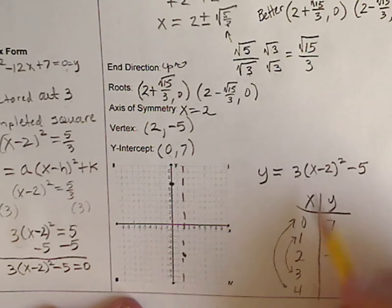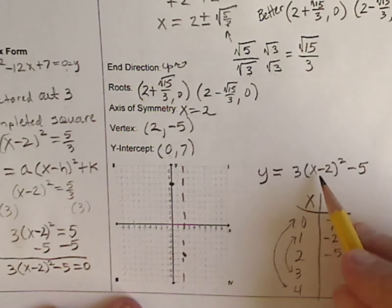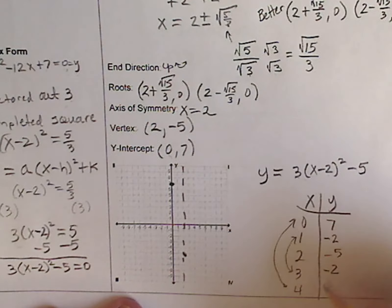So, put in a 1. 1 minus 2 is negative 1. Negative 1 squared is 1. 1 times 3 is 3. 3 minus 5, negative 2. I should get the same when I plug this in, if I didn't do anything wrong. And if I did do something wrong, I'll go back and fix it. 3 minus 2 is 1. 1 squared is 1. 1 times 3 is 3. 3 minus 5, negative 2.